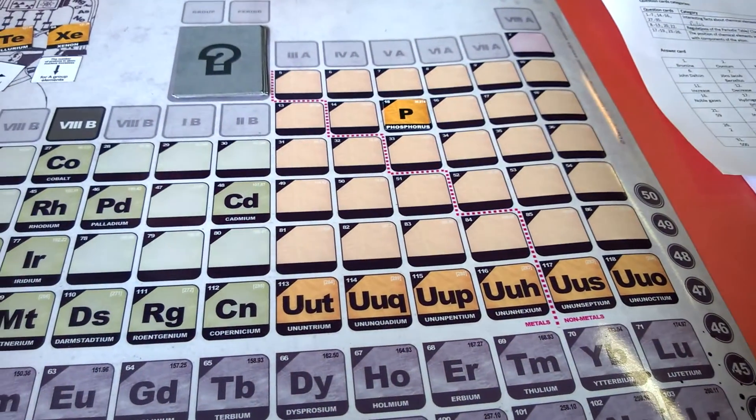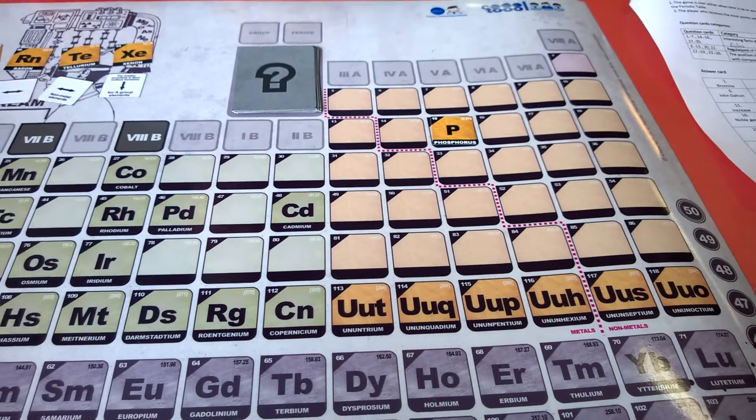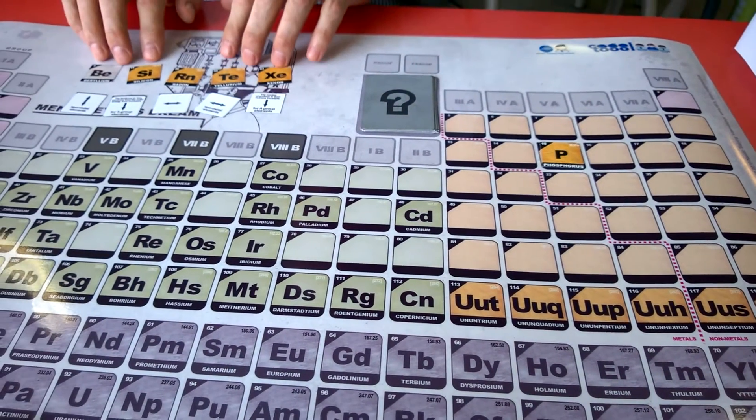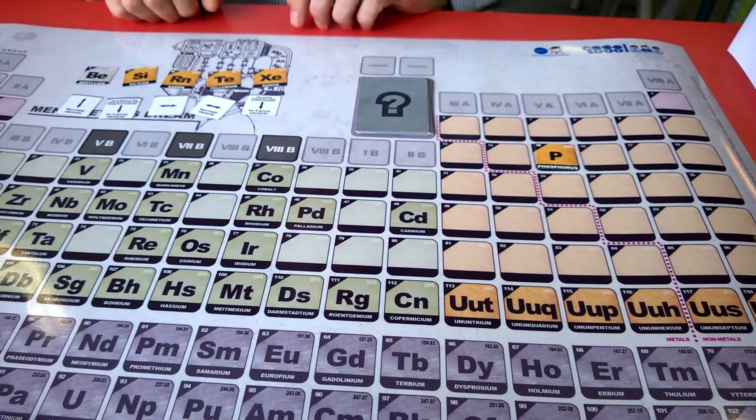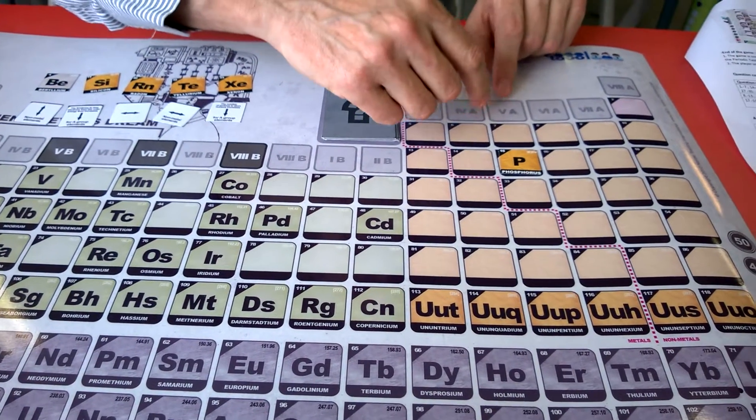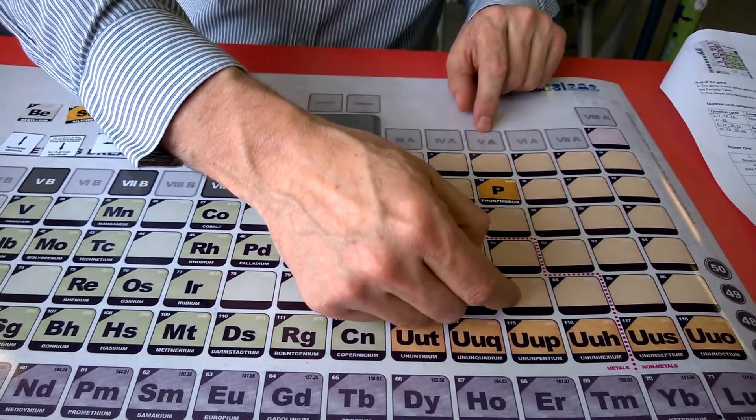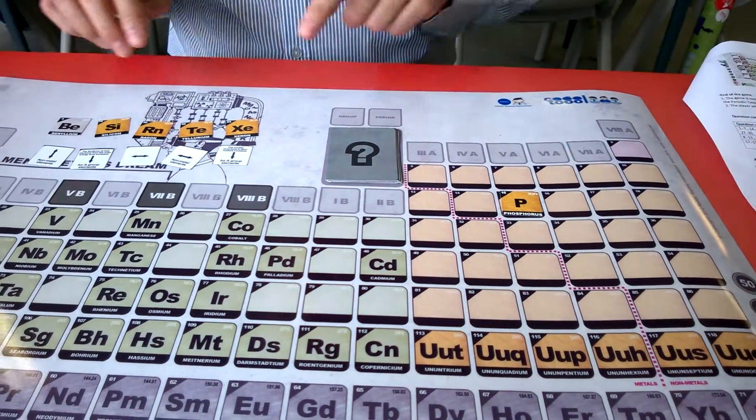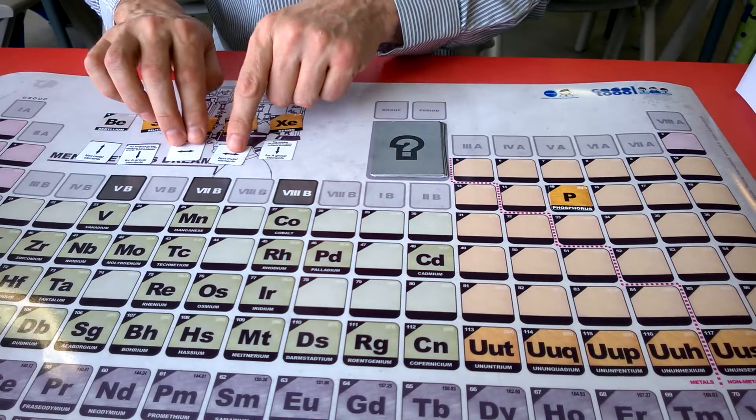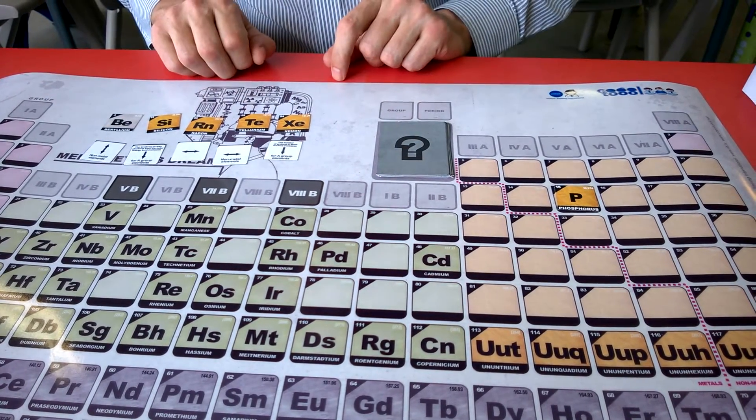I now have the possibility of adding two more cards to the board and they must come from the five cards that I was dealt at the beginning of the game and I must make sure that the cards I place are either in the same group as Phosphorus or in the same period as Phosphorus. I also have to make sure that I have a direction card that would allow me to place that element.